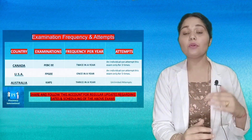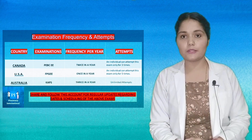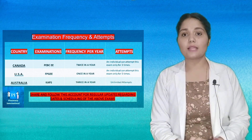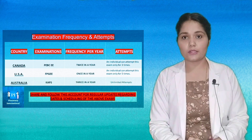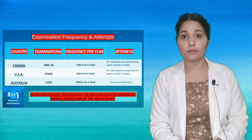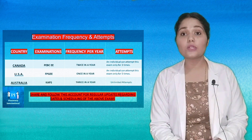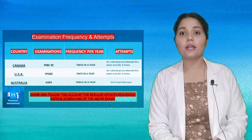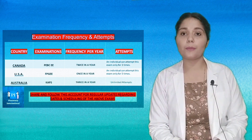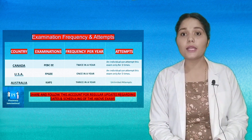So without wasting any time, let's get started. For Canada, the name of the examination is the Evaluating Examination, that is PEBC EE — Pharmacy Examining Board of Canada Evaluating Examination. The frequency per year is twice, meaning this exam happens two times a year, and a person has a maximum of three attempts.